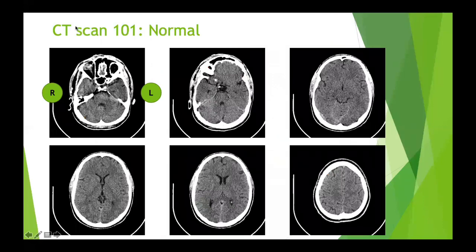CT scan 101: these slides are taken from recent cases. Just to orientate yourselves — by convention, your left-hand side as you look at a scan is the patient's right side, and your right side is the patient's left side. If you forget, imagine you're standing at the foot end of a patient going into a scanner, because that's how the slices are taken.